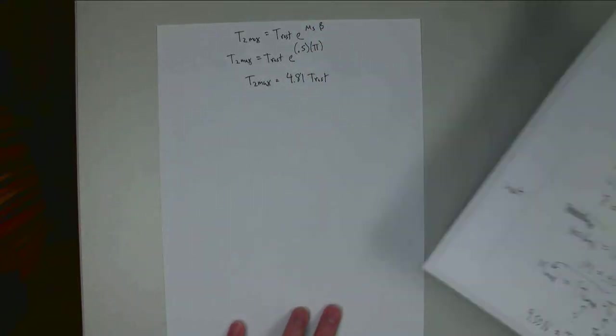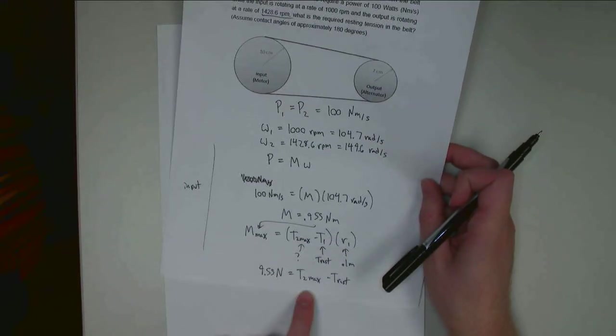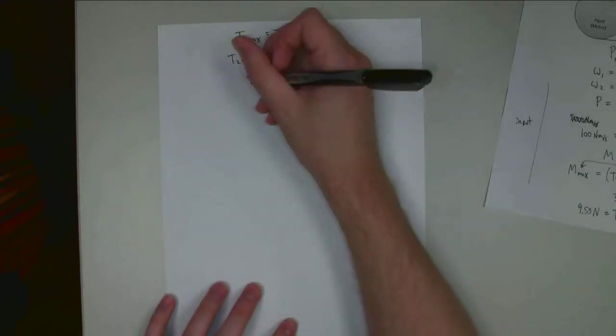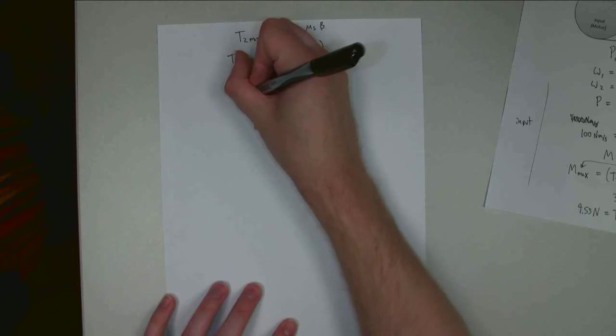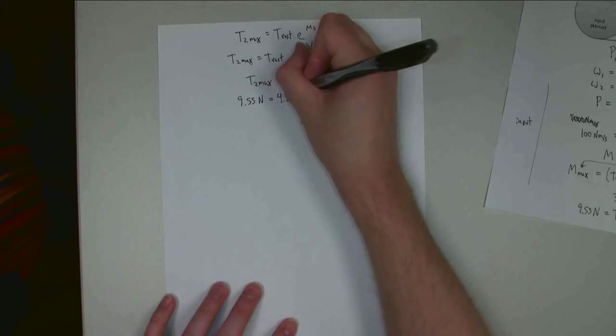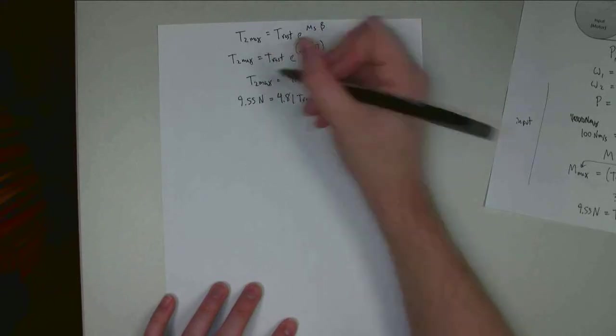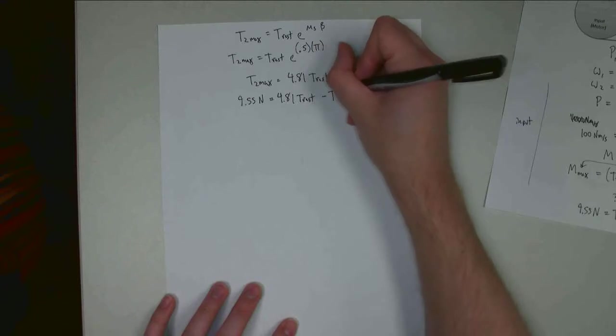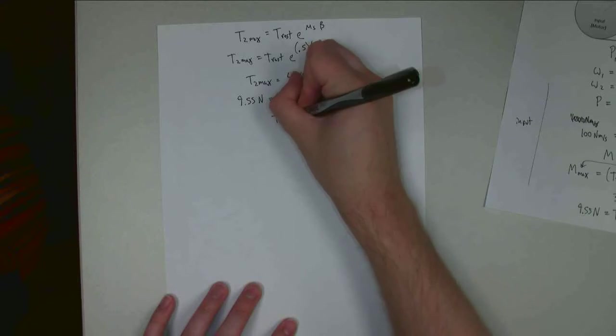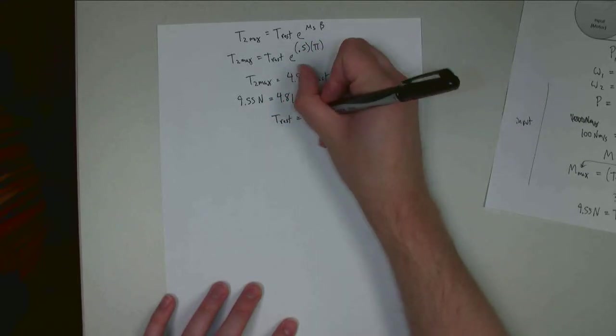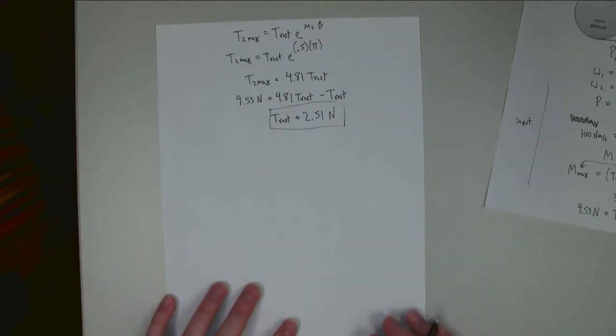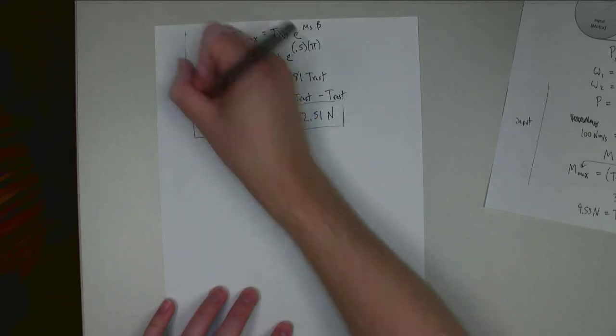Now I have two equations I can use. Earlier on, I had this relationship between T2 max and T resting. Now I have this second relationship. Now I can solve for these two variables. So if I have 9.55 newtons is equal to 4.81 times the resting tension, that's T2 max minus the resting tension, I can solve for T rest. And I know that I need a resting tension of at least 2.51 newtons. So all of this was still for the input.